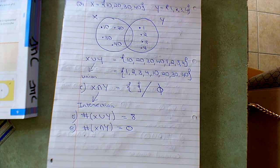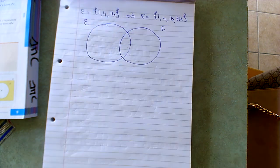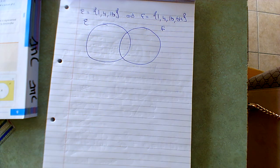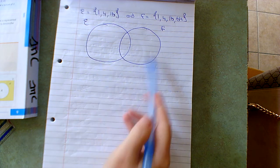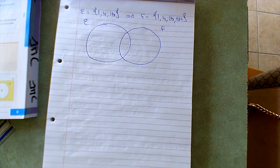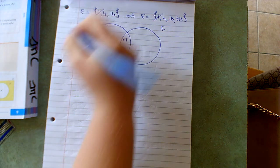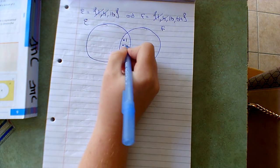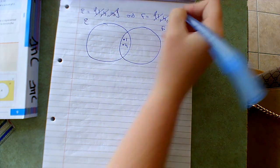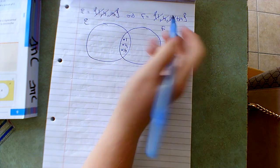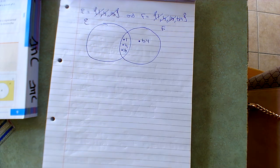You had one more question to complete — question 5. Set E is 1, 4, 16 and set F is 1, 4, 16, 64. I'm asked to copy and complete the Venn diagram, so I need to fill it in. The first thing to always fill in is your intersection — the middle part — by finding what they have in common. E has 1 and F also has 1, so I put in 1. E has 4 and F also has 4, so I put in 4. E has 16 and F also has 16, so I put in 16. E has nothing left over, so nothing goes on the left side. F just has 64 left over, so I put in 64.